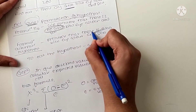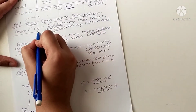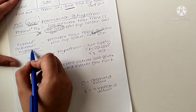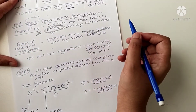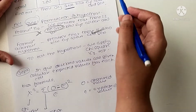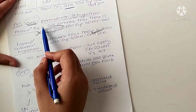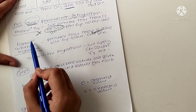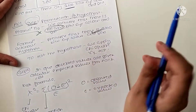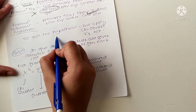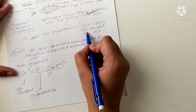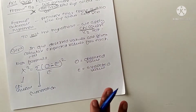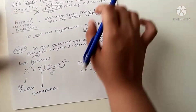So, null hypothesis means no association and alternate hypothesis means there is association present. To test the hypothesis, we will apply the chi-square test.